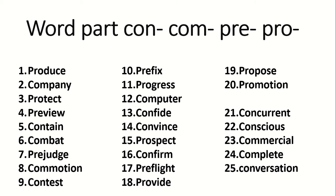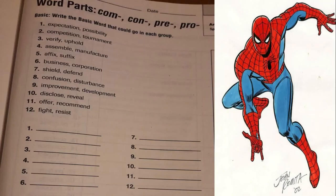The first activity is to locate the meanings of these words in Spanish. Okay? Now, let's go to our book, page 301. Word parts: Com, Con, Pre, Pro.